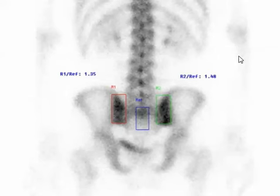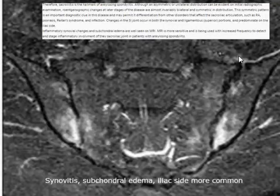In early ankylosing spondylitis, a bone scan can be very helpful. An MRI of the sacroiliac joint can show subchondral erosive changes — usually more on the iliac side — and synovitis of the SI joints. However, when you get an MRI of the lower back, it doesn't always include the SI joint. We diagnose ankylosing spondylitis frequently — about one case every three months. These patients can have normal MRI scans of the lumbar spine, with the findings only at the sacroiliac joint.